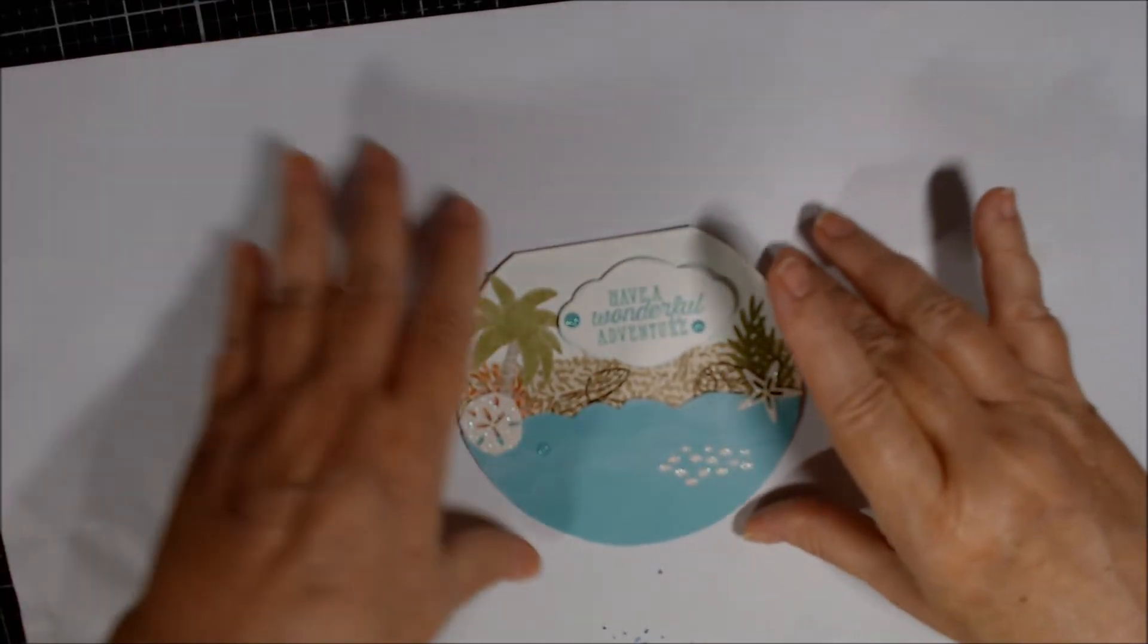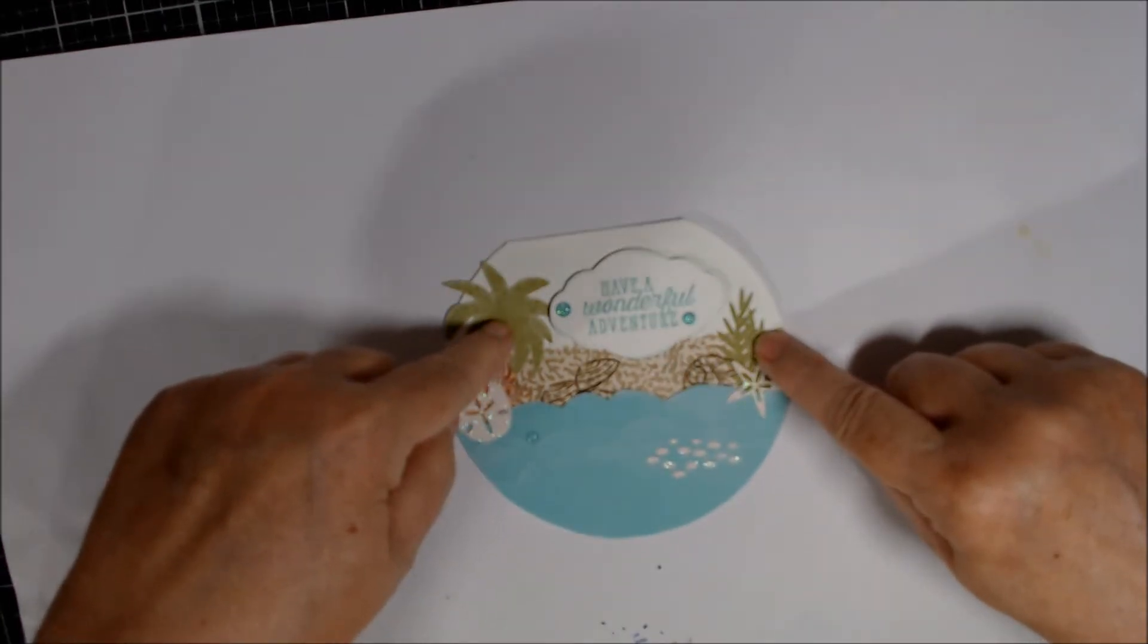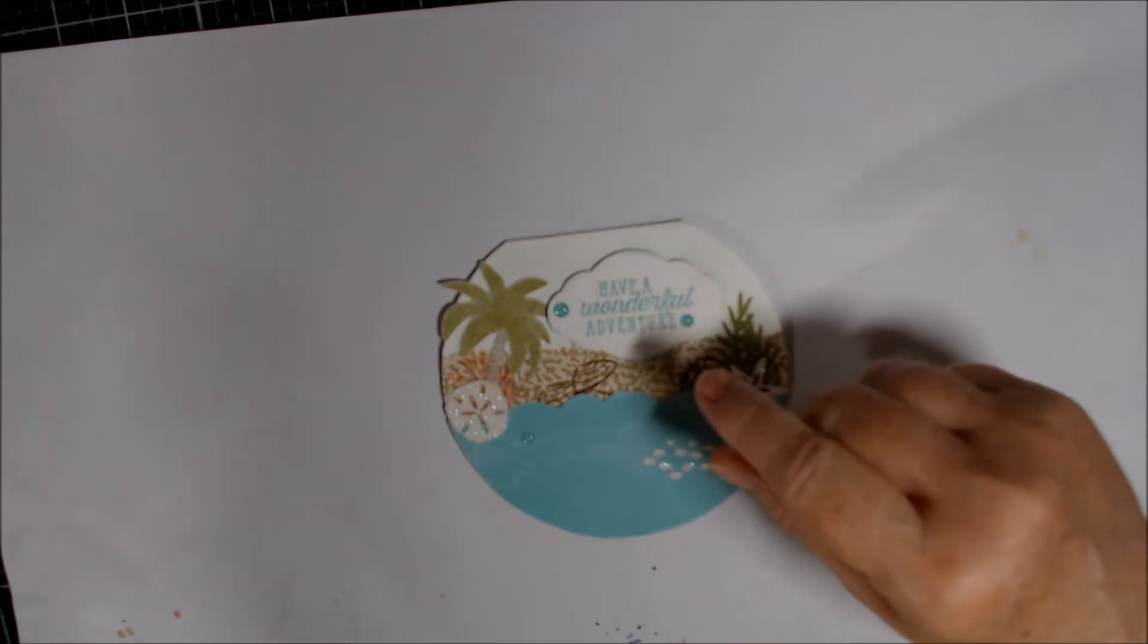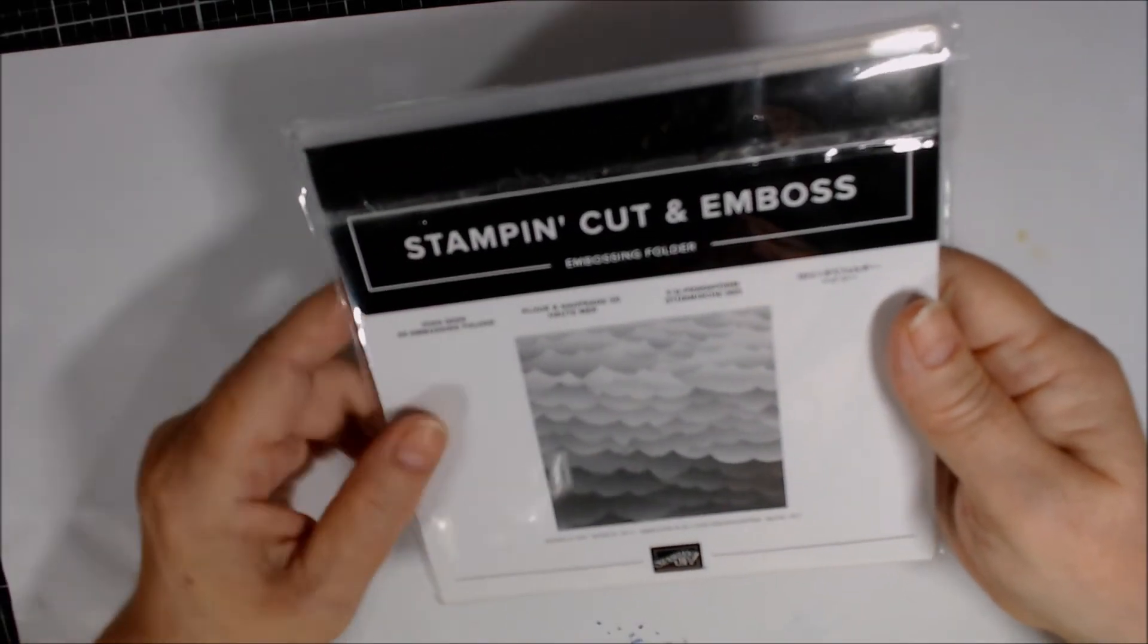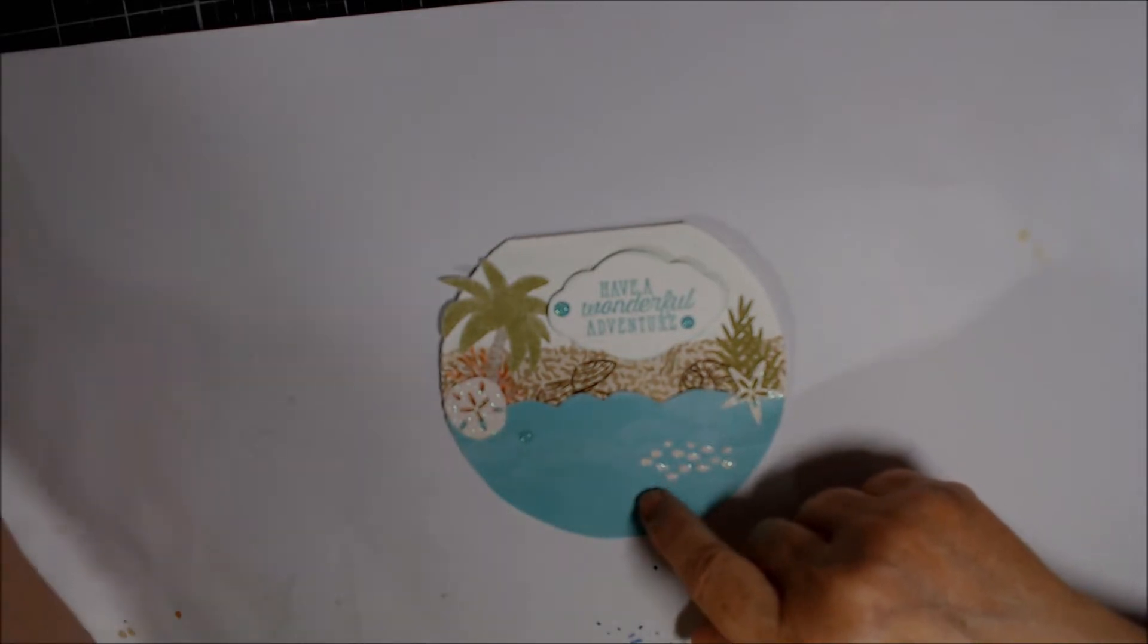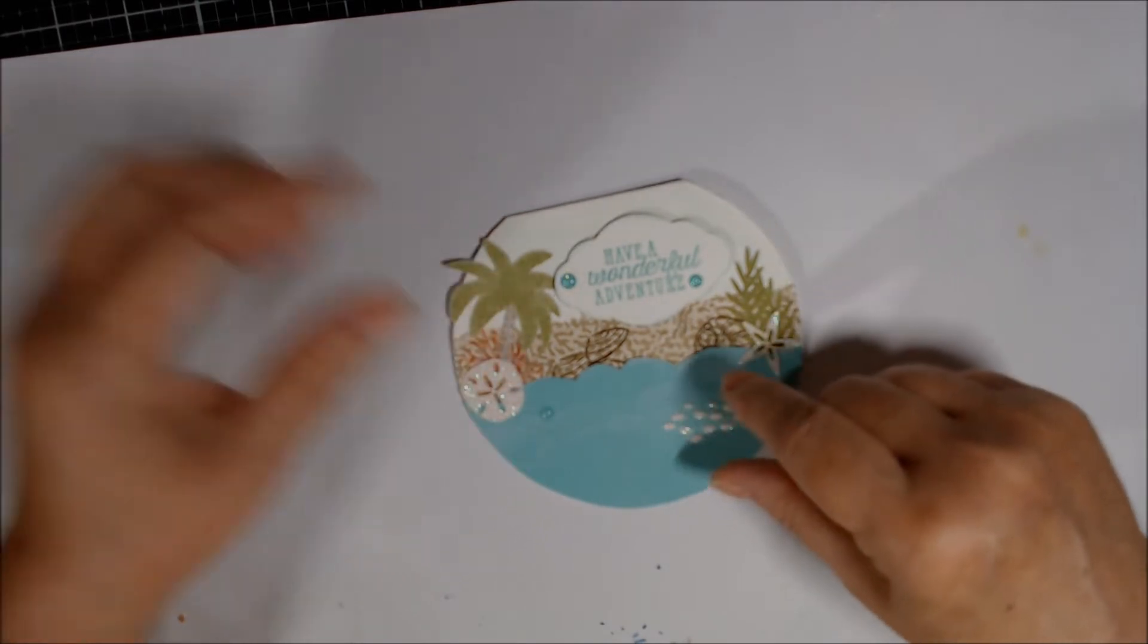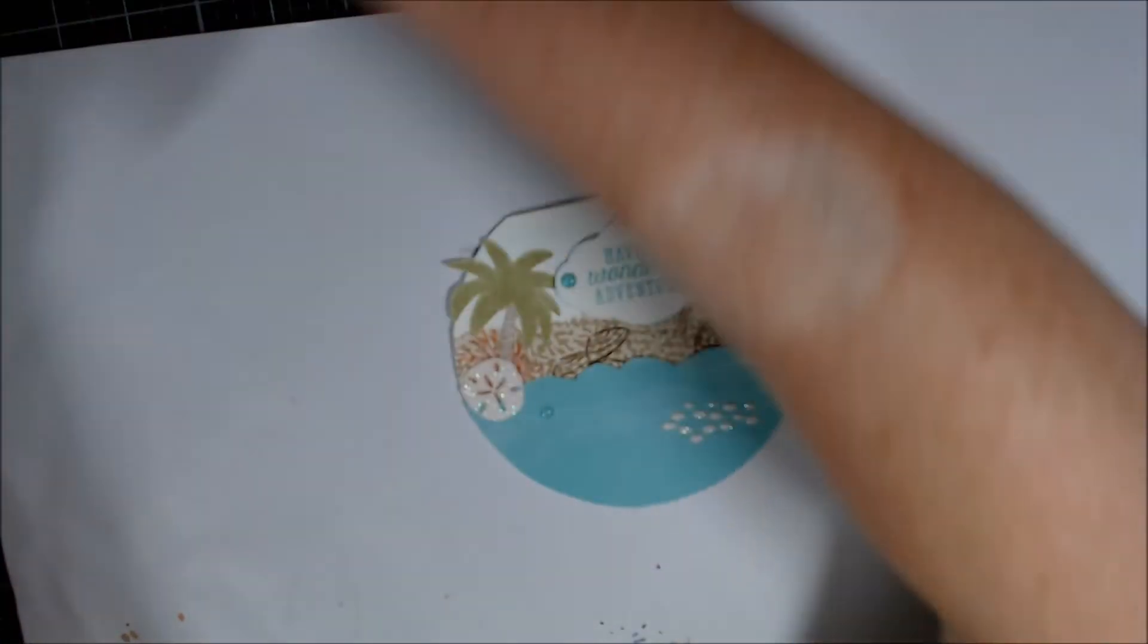Yes, I did pull out last month's paper pumpkin kit. But I also pulled out the new, and I did use Stampin' Up! products. The new High Seize 3D Embossing Folder. This is a piece of Coastal Cabana cardstock.